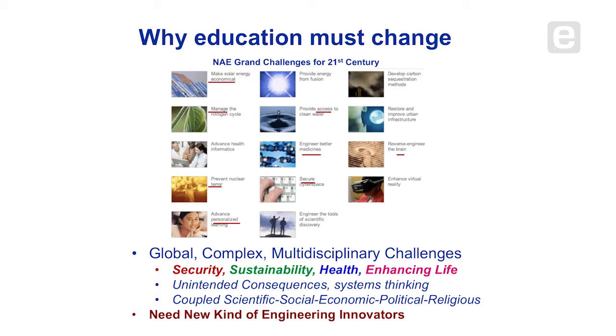The National Academy of Engineering in the U.S. has been looking ahead at the kinds of challenges that our species is going to have to deal with. These all fit into four major areas: security, sustainability, health, and the enhancing of life as the number of people grows. These problems are not technology problems. Technology has something to do with all of them. Nevertheless, they're about human behavior, and we have to take human behavior into account if we're going to solve any of them. We need a broader community. This involves coupled scientific, social, economic, political, even religious dimensions because the population has to accept it or it doesn't work. What this really means is that we need a new kind of engineering innovator.